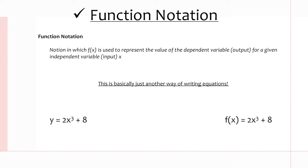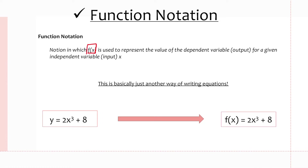Now we're going to talk about function notation — just a different way of writing an equation. The notation f(x) is used to represent the value of the dependent variable, which is the output, for a given value of the independent variable x, which is the input. For example, y equals 2x cubed plus 8 is simply written as f(x) equals 2x cubed plus 8. I just replace y with f(x).